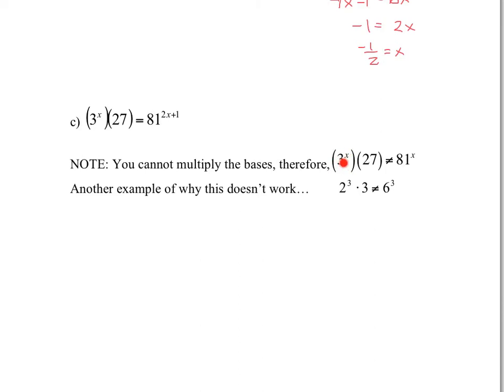However, we could change all those numbers. We're going to go back to here. We could change the 3, the 27, and the 81 to a power of 3. So we have 3 to the power of x, so that's the first bracket. I can change the 27 to 3 to the power of 3. And then the 81 is 3 to the power of 4, all to the power of 2x plus 1.